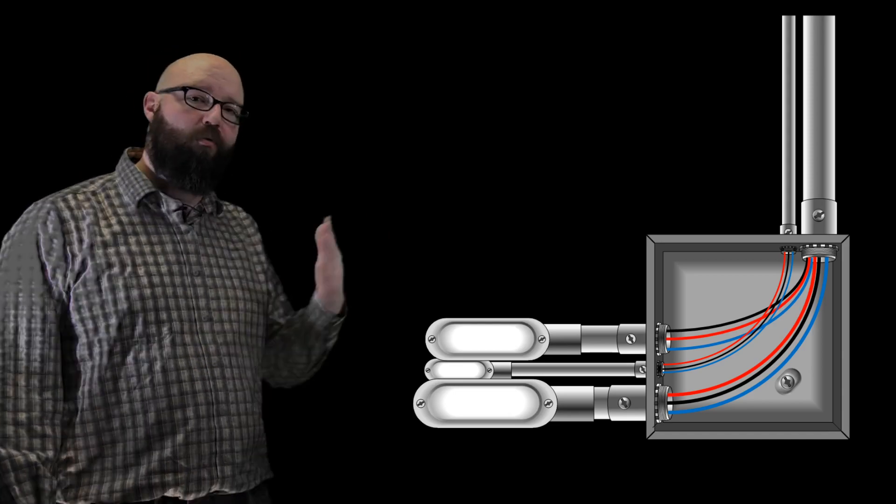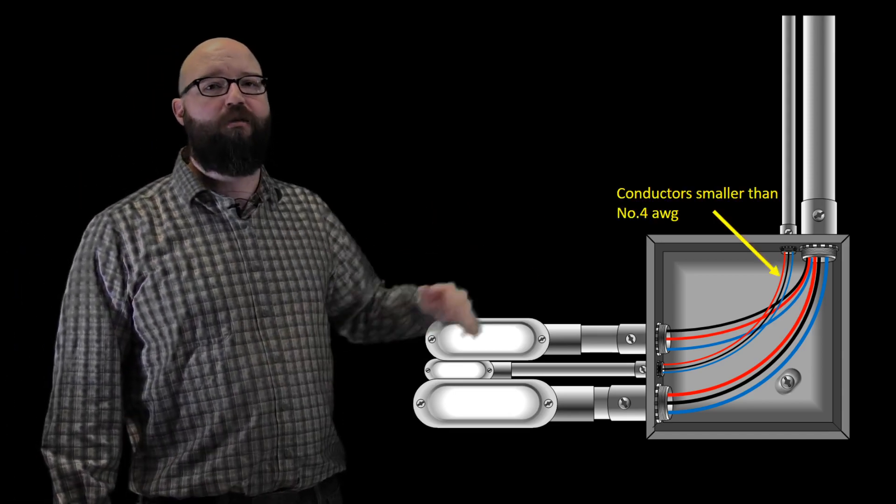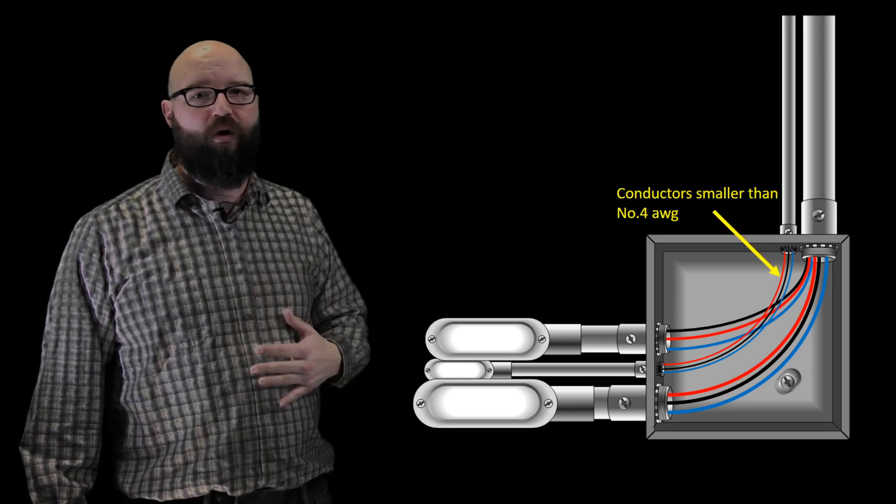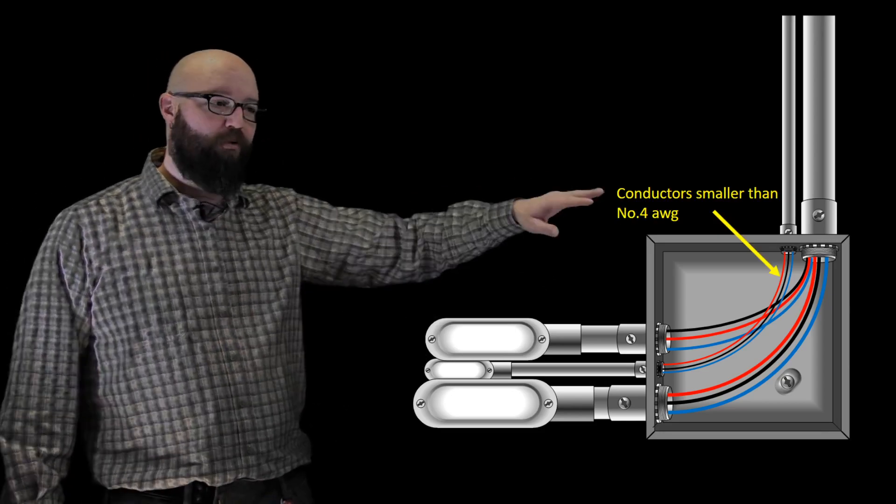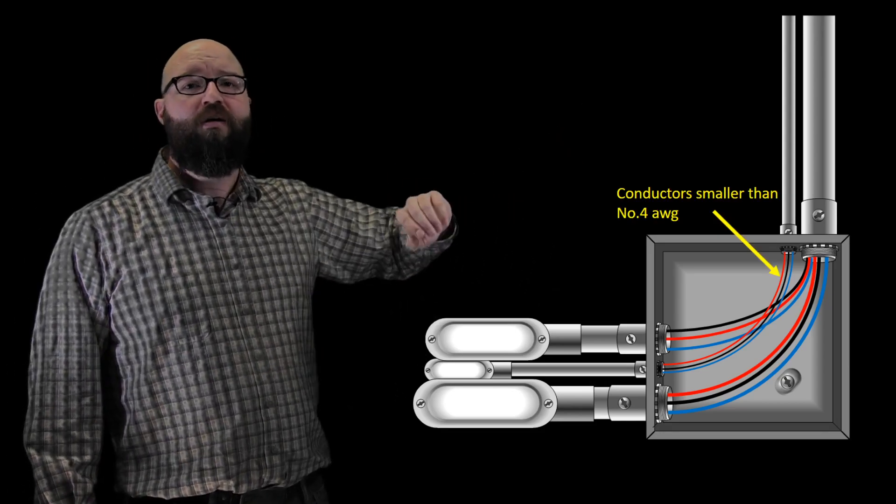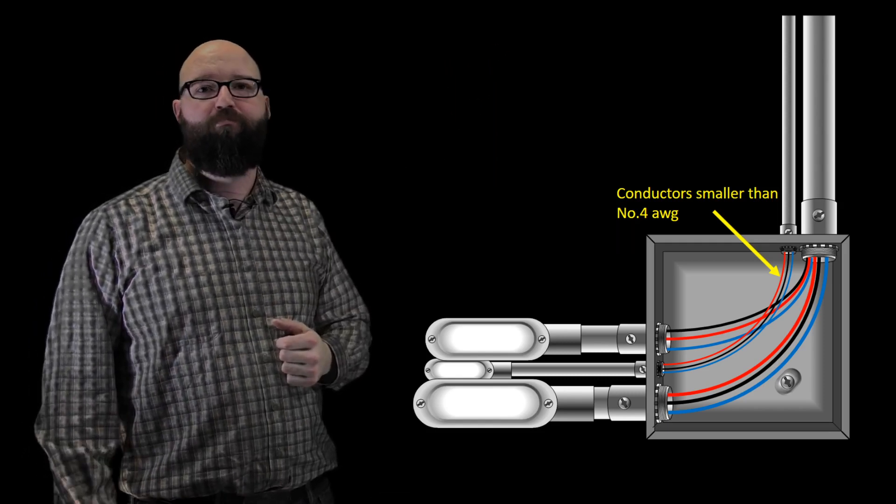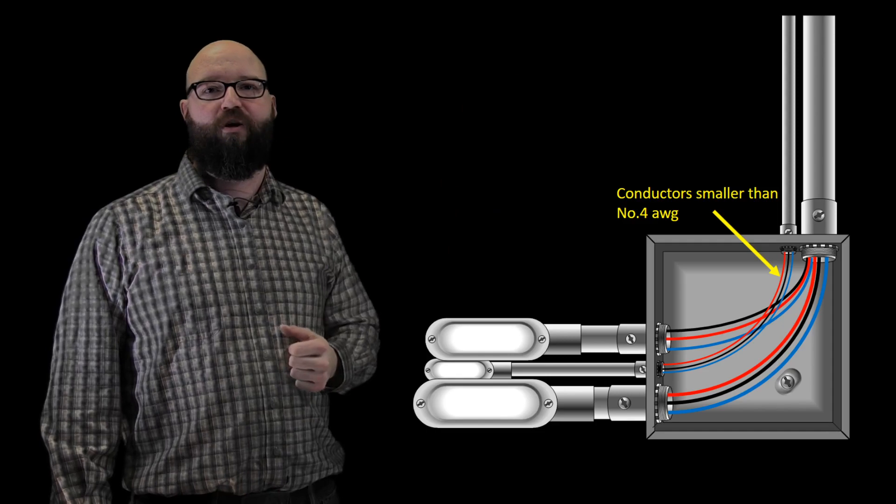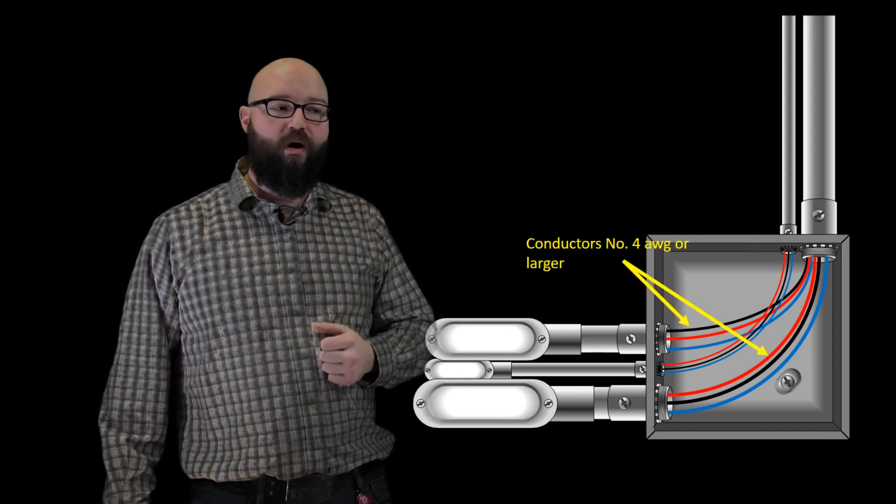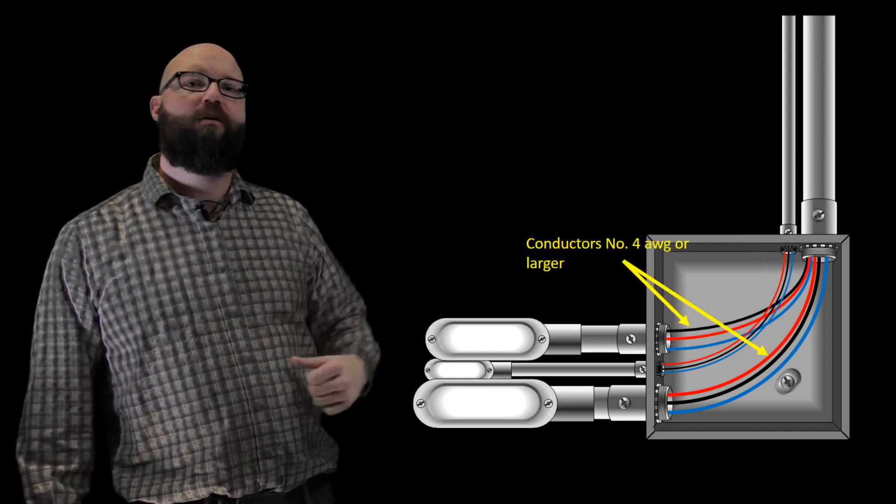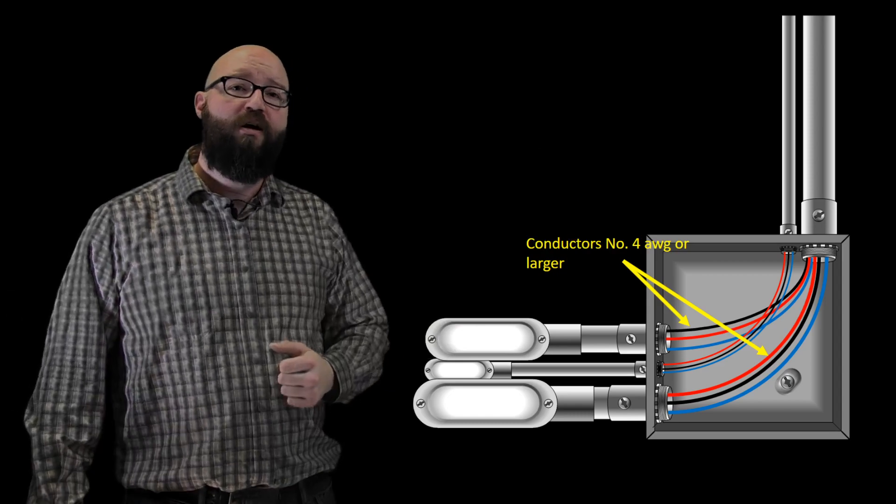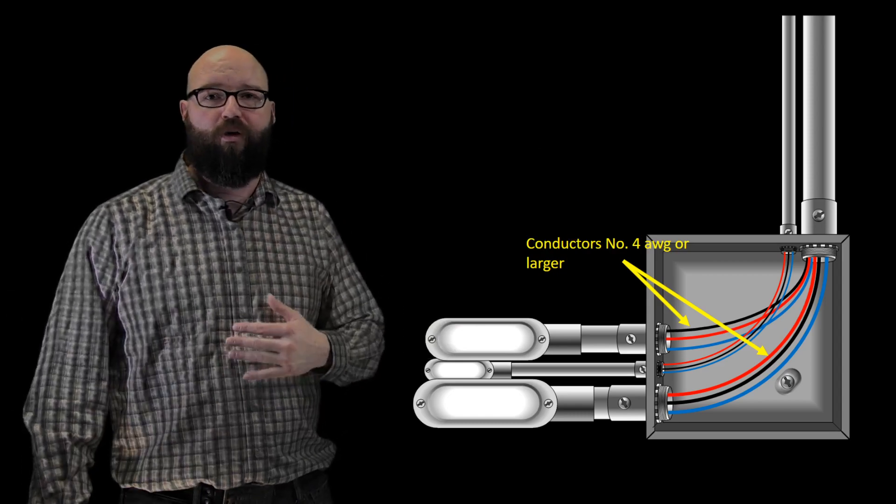First thing I want to mention, 12-3036 only deals with conductors that are smaller than a number four gauge, so we're not gonna worry about these conductors right here. Those would be dealt with in 12-3034 for sizing our boxes, totally different video for that one. For this one we are gonna worry about these two other sets of conductors here that are larger than a number four. Those we're gonna take into account when we look at 12-3036.